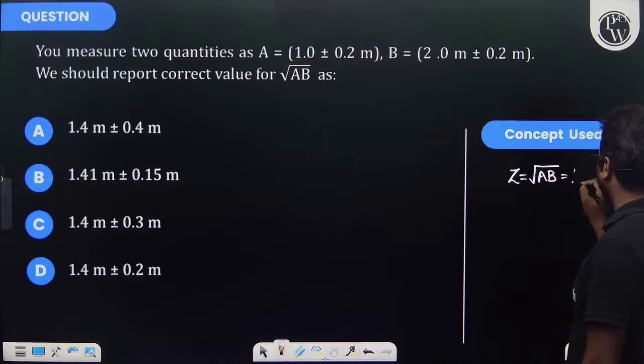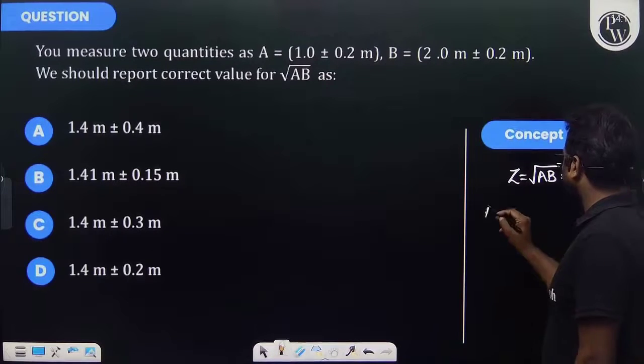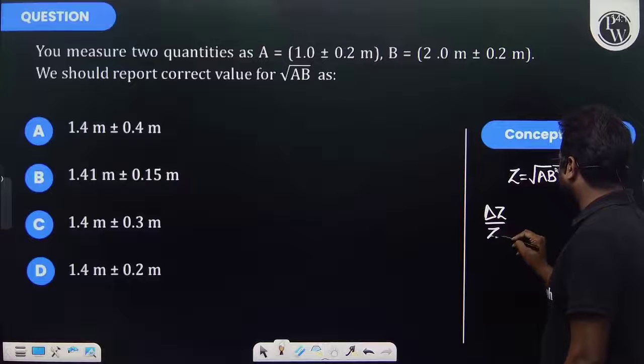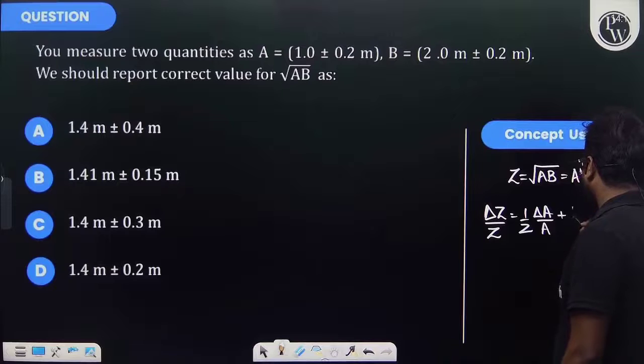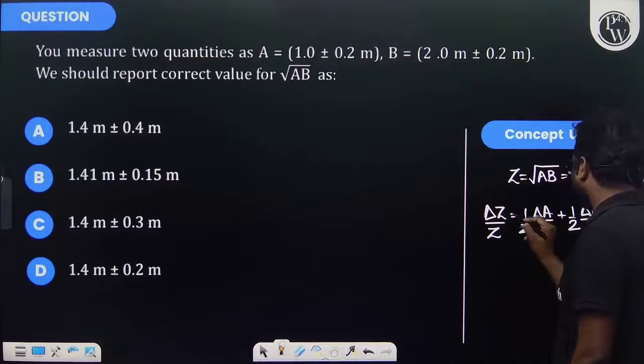This can be written as A^(1/2) and B^(1/2), so the error formula becomes ΔZ/Z = (1/2)(ΔA/A) + (1/2)(ΔB/B).